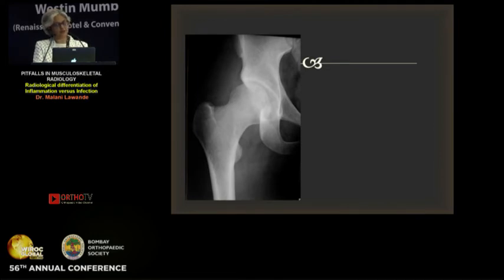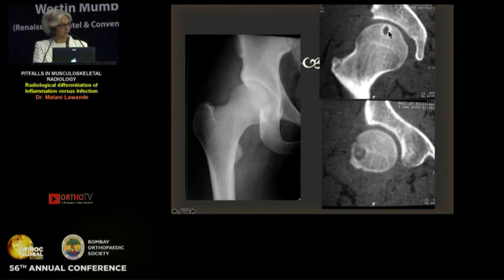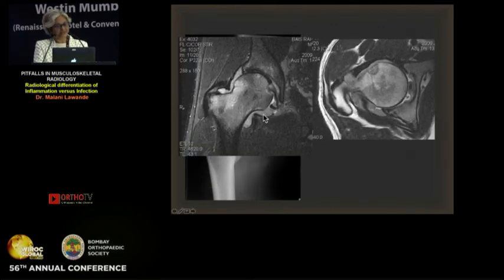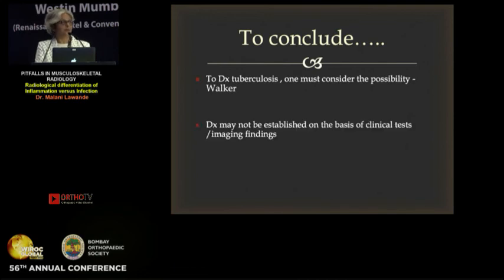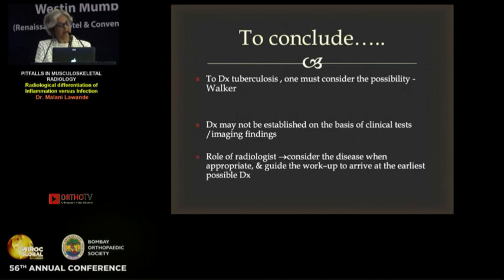The last case: a patient came with hip pain. X-ray showed a cystic area, CT showed two lesions thought to be osteoid osteoma, but the clinical history was not fitting. MRI showed extensive synovial thickening — not thin and smooth, but significant. Ultrasound-guided biopsy turned out to be tuberculosis. So to diagnose tuberculosis, one must consider the possibility — anything can be tuberculosis at times. Only imaging may not help; we have to put everything together. The role of the radiologist is to consider the disease and guide further management, conveying the degree of uncertainty so that further evaluation can be done accordingly.